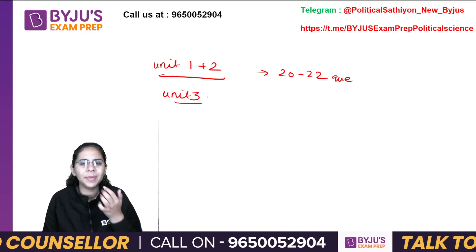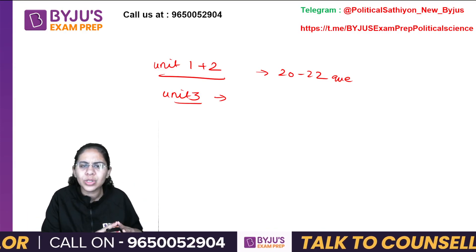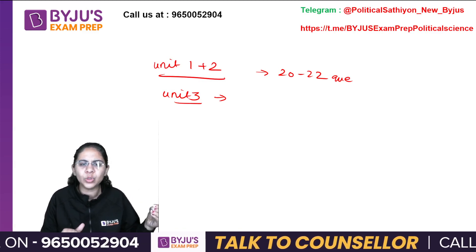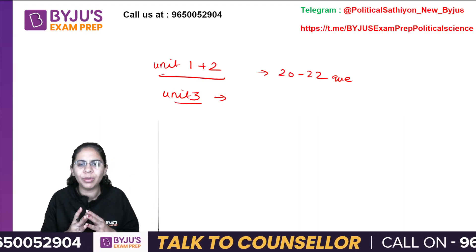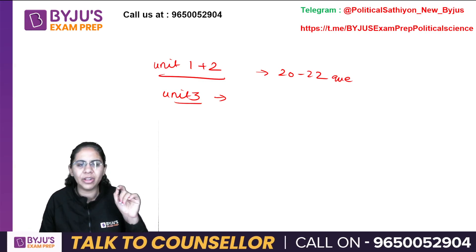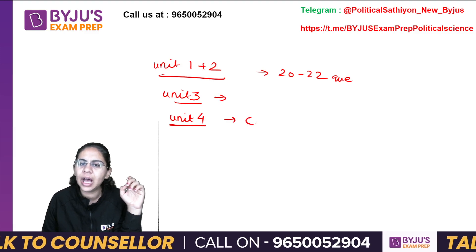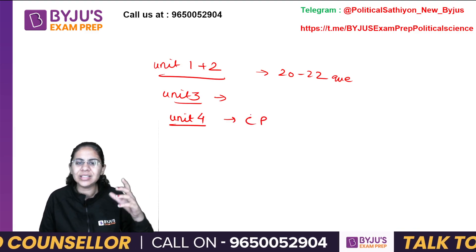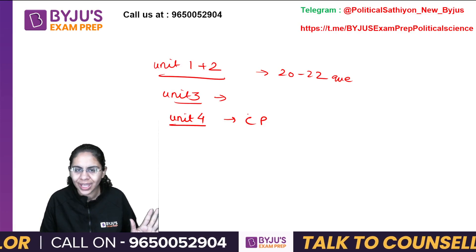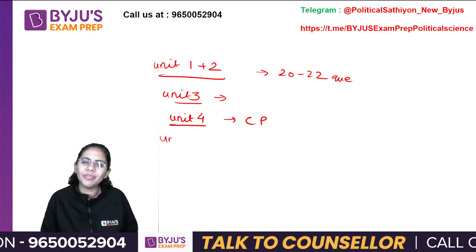Unit 3 — Indian political thinkers — में अगर आपको ज़्यादा problem नहीं होती और आपने questions solve किए हुए हैं, तो do not worry। Unit 3 में गांधी, नेहरू, अंबेडकर — ये सब हमने schools और colleges में पहले पढ़ा होता है, तो generally students को unit 3 में problem नहीं होती। फटाफट इसका revision करके इसे किनारे रख सकते हैं। Unit 4 — comparative politics — में ध्यान देना है कि approaches, theories of revolutions, nationalism — इन topics के questions गलत ना हों। जो conceptual straightforward notes से questions आ रहे हैं, वो आपके गलत ना हों।